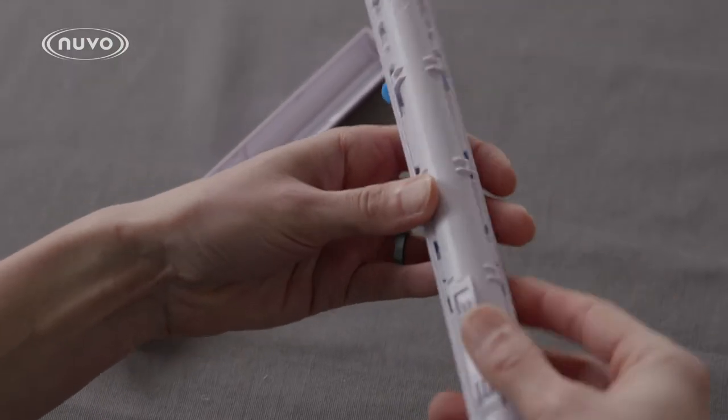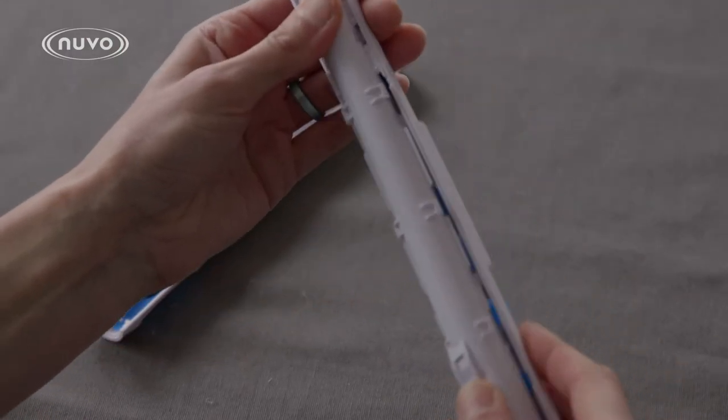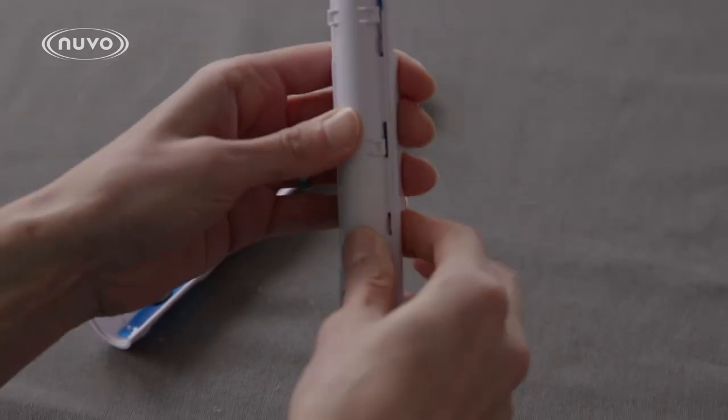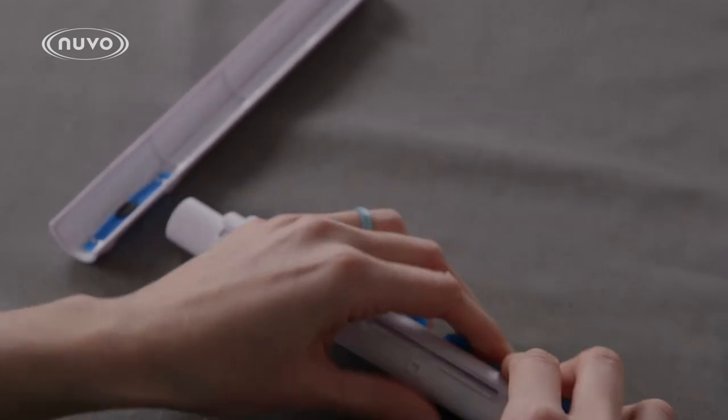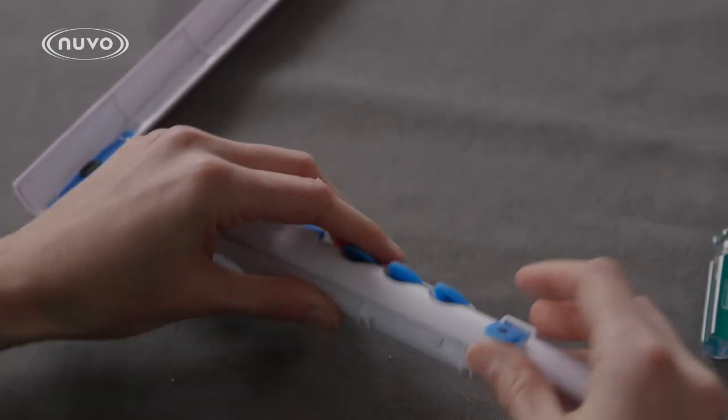When you are ready to reassemble, make sure that the keys line up with the openings for the inside of the body. Press firmly and you will hear clicks on either side of the instrument as the middle attaches to the front.